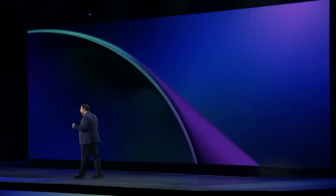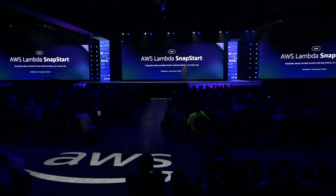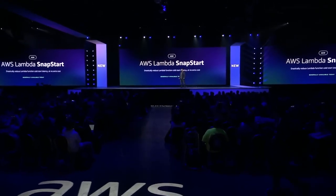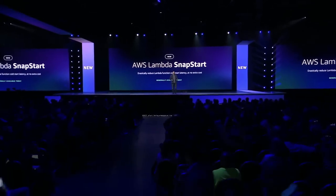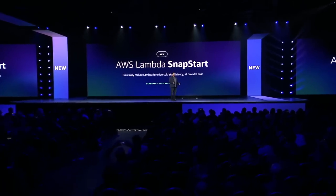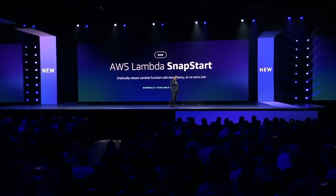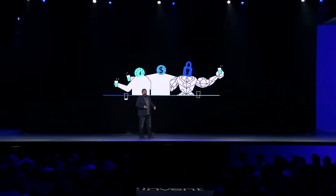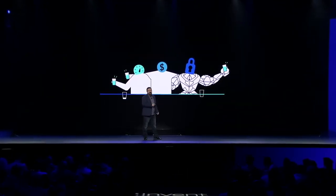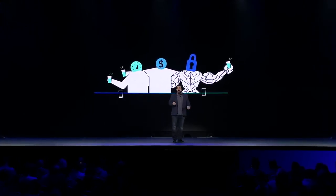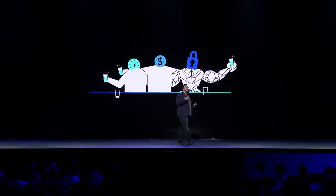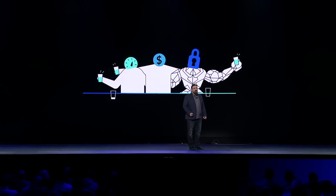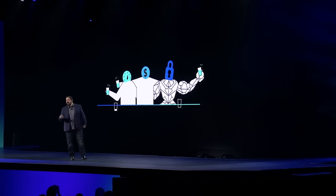Tonight I'm excited to announce Lambda SnapStart. Lambda SnapStart significantly decreases Lambda cold start time. It's built on Firecracker snapshotting functionality, and it's available tonight at no additional cost. If there's one thing to take away from tonight, it's that performance work is never done. At AWS, we're always innovating to provide the best performance at the lowest cost without compromising on security — from custom silicon to Nitro to the latest EC2 instances to pushing the boundaries of serverless computing.